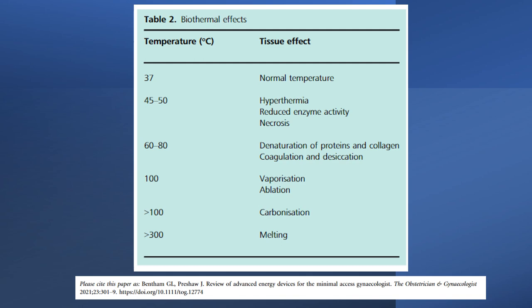Biothermal effects. This table is talking about the temperature and the effect on the tissue. So 37 degrees Celsius, the tissue effect is normal temperature. 45 to 50 degrees Celsius, tissue effect is hyperthermia along with reduced enzyme activity and necrosis. 60 to 80 degrees Celsius, denaturation of proteins and collagen coagulation and desiccation. 100 degrees vaporization and ablation, more than 100 degrees carbonization, more than 300 degrees Celsius melting.